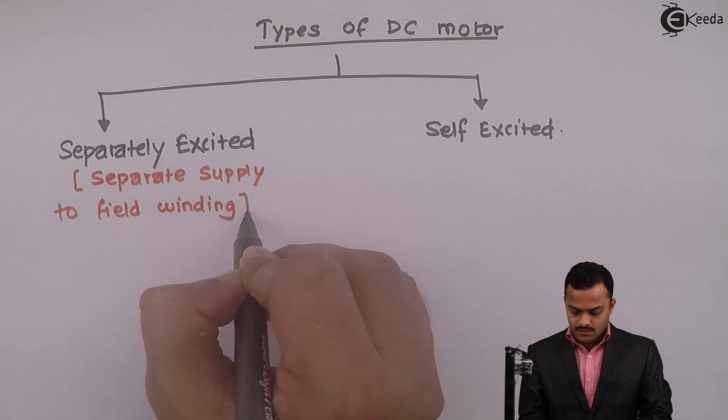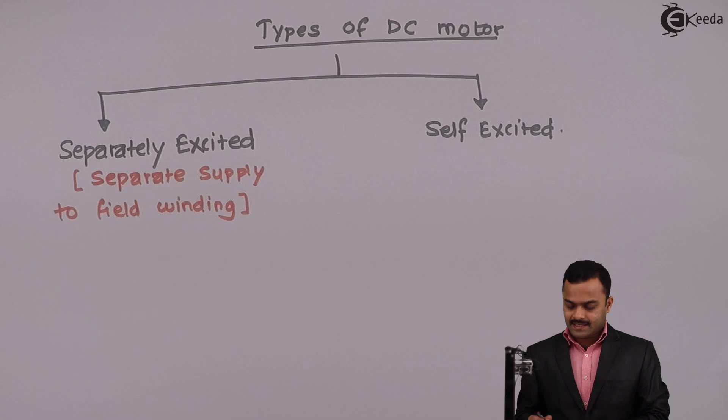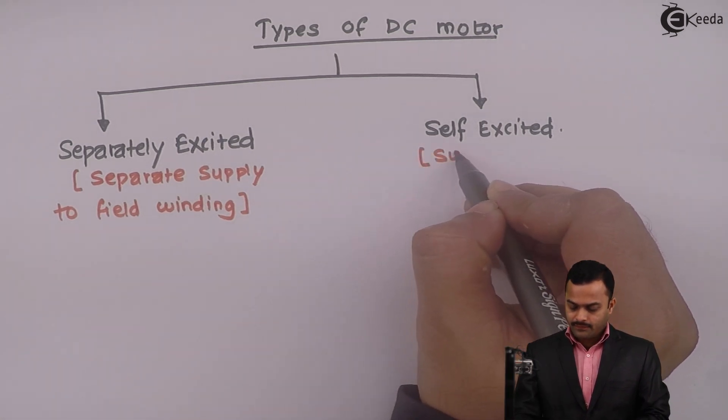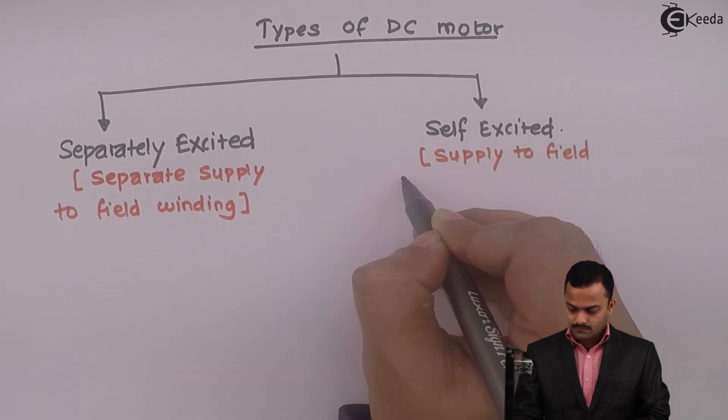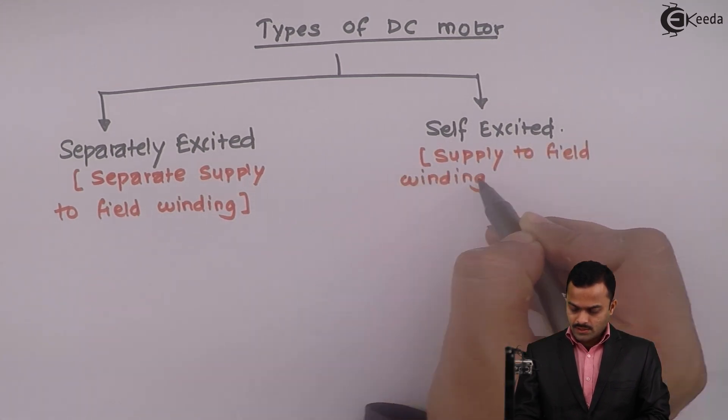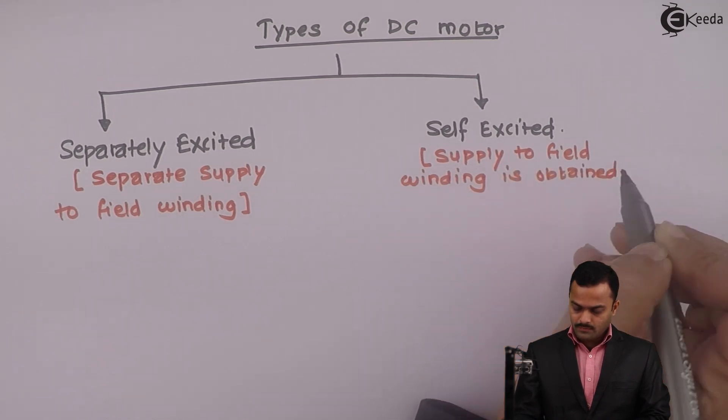To produce a main flux, whereas self-excited supply for field winding is obtained from armature voltage.